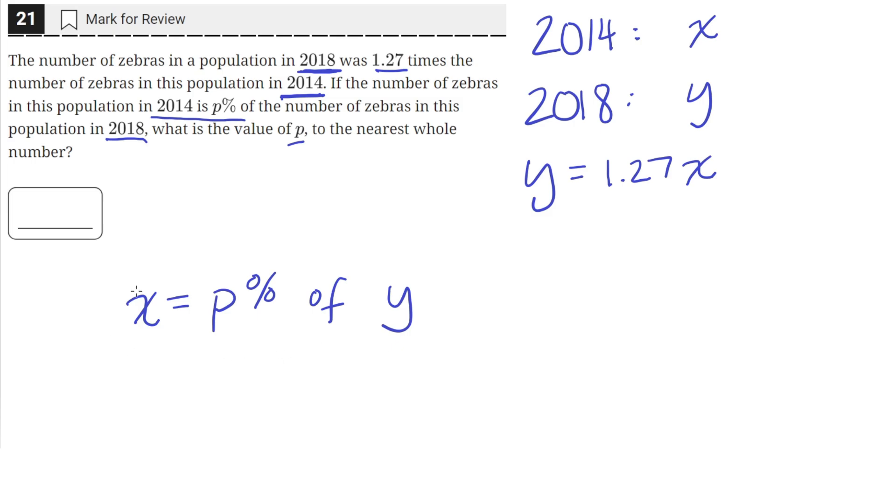And so we can rewrite this percentage to just x equals p over 100, since that would give us the percentage in decimal form, times the population in y, and that would give us x. So now we have two equations.